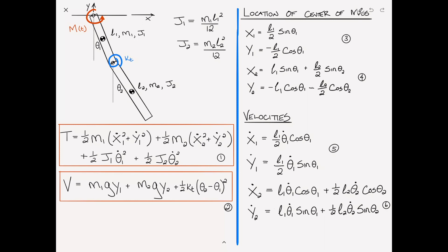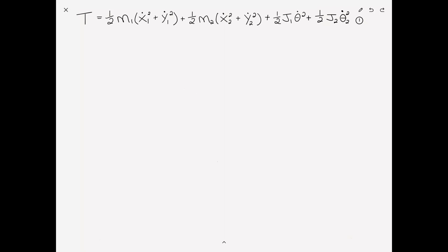Just a reminder that in part one we examined a double compound pendulum and found expressions for the kinetic and potential energy, as well as expressions for the location and velocities. It bears repeating that for pendular problems it generally is in your best interest to derive the equations in Cartesian coordinates and then eventually write it in terms of theta or some sort of angle. We start by copying equation one from the previous page — the expression for the kinetic energy — and now substitute equations five and six into equation one.